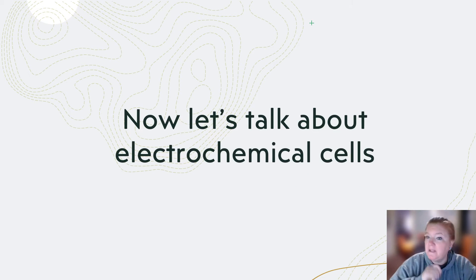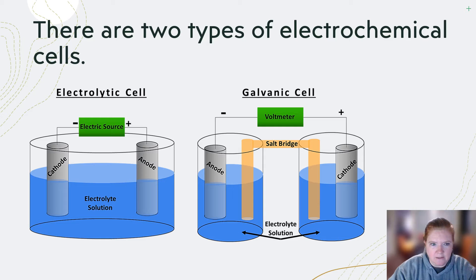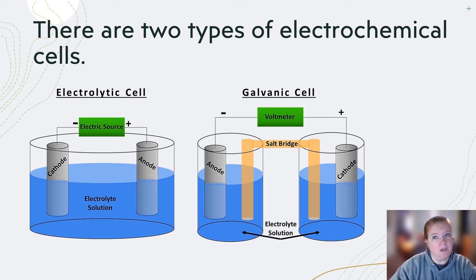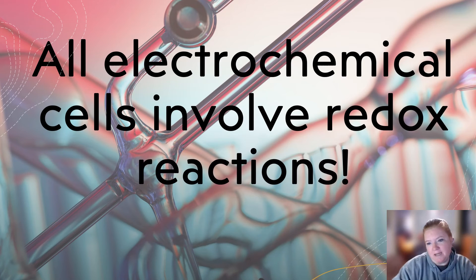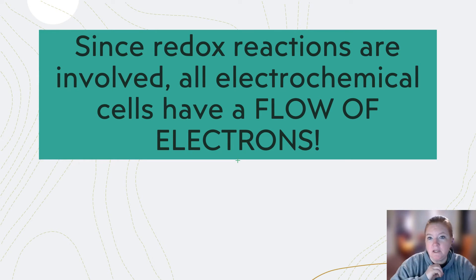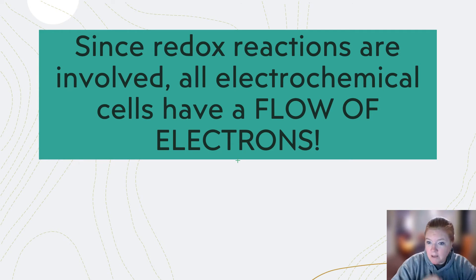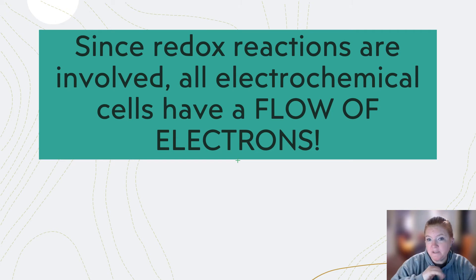Let's talk about electrochemical cells. There are two types: electrolytic and galvanic, also called voltaic — which should make you think of a battery. All electrochemical cells involve redox reactions, every single one. Since redox reactions are involved, all electrochemical cells have a flow of electrons, because oxidation is losing electrons and reduction is gaining electrons.